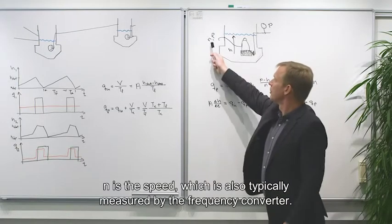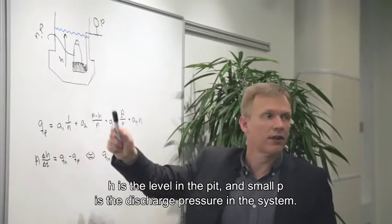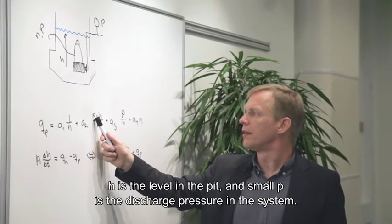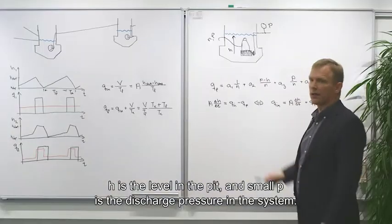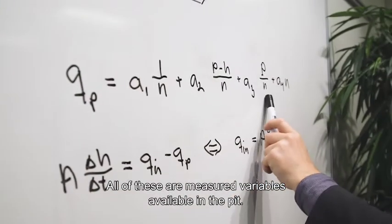N is the speed, which is also measured typically by the frequency converter. H is the level in the pit. And small p is the discharge pressure of the system. So all of these are measured and available in the pit.